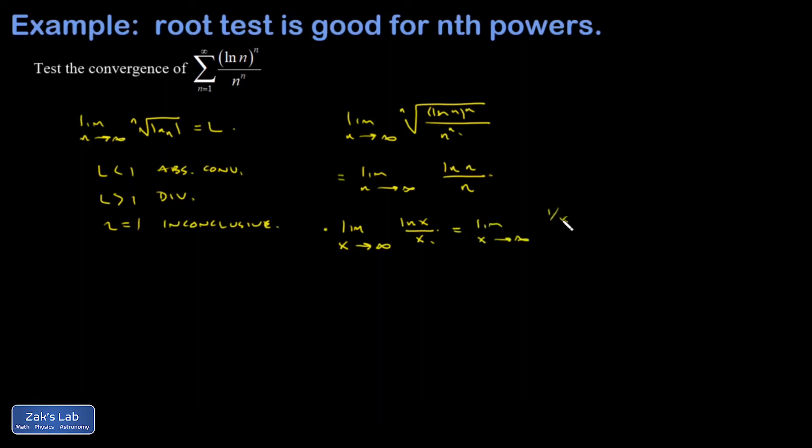And I get 1 over x for the derivative at the top, 1 for the derivative at the bottom. And now the limit of 1 over x as x goes to infinity is definitely 0. That means the limit of natural log of n over n is 0 as well.